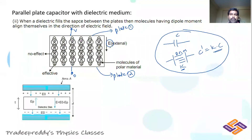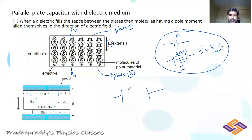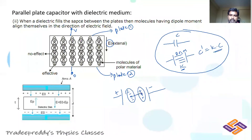These molecules can align themselves in the external electric field depending on their composition, such that all positive centers come towards one side and negative centers towards the other. All negative charges are attracted towards the positive plate, and positive charges towards the negative plate, resulting in some distance between positive and negative centers — this is a dipole.